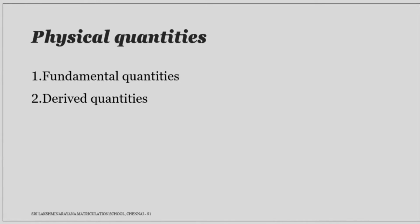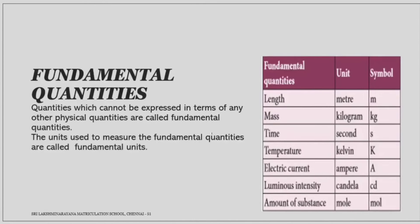Physical quantities can be classified into two: fundamental quantities and derived quantities. Quantities which cannot be expressed in terms of any other physical quantities are called fundamental quantities. The units used to measure the fundamental quantities are called fundamental units. Some of the fundamental quantities with its unit and symbol are given in the table.